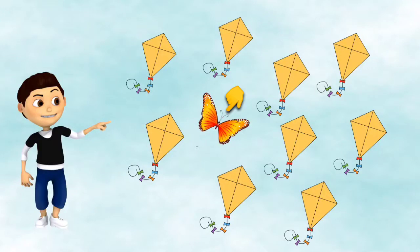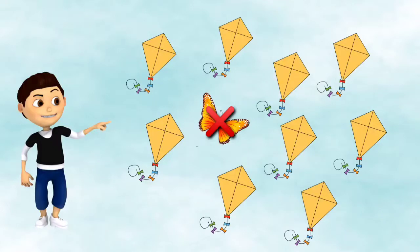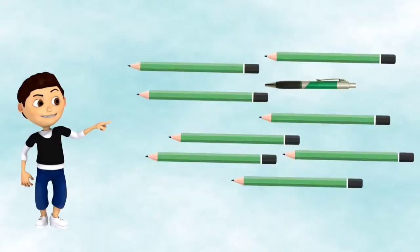We check the rest of the objects and find every object here is a kite other than this one. This is a butterfly, which is different than a kite, and we are going to cross the butterfly like this.